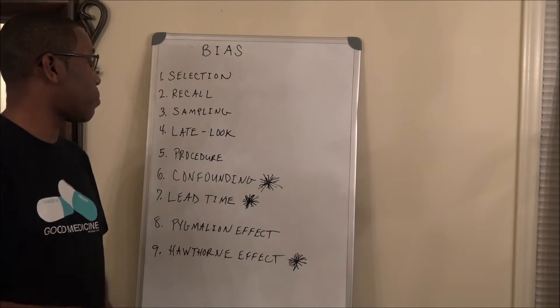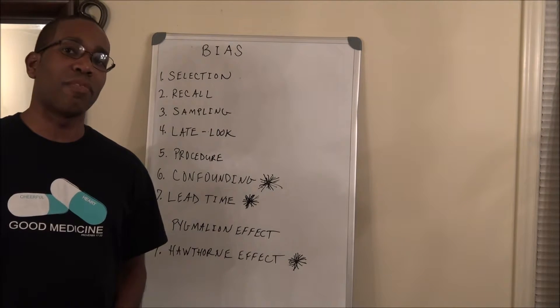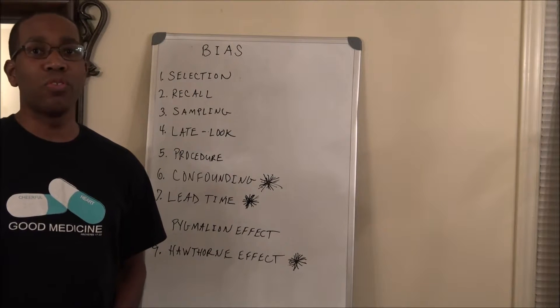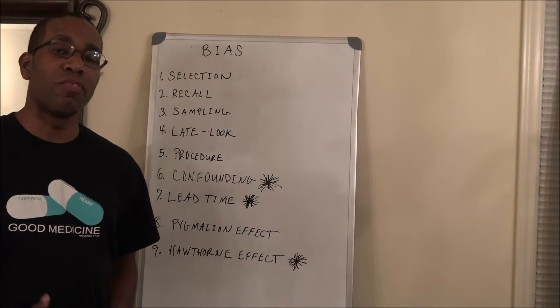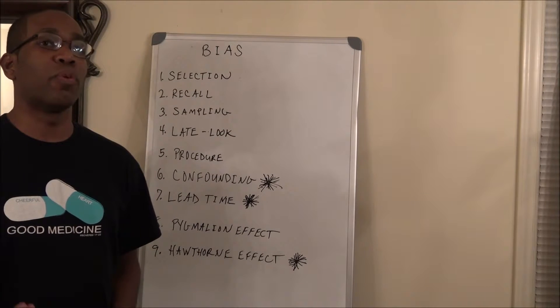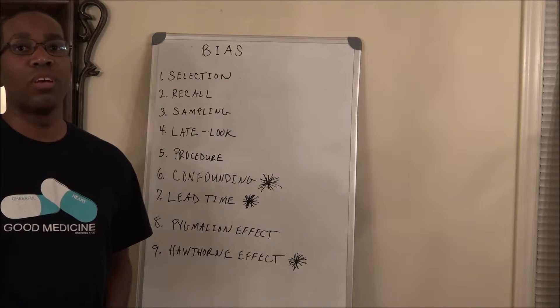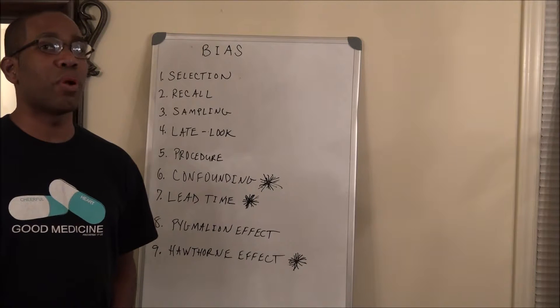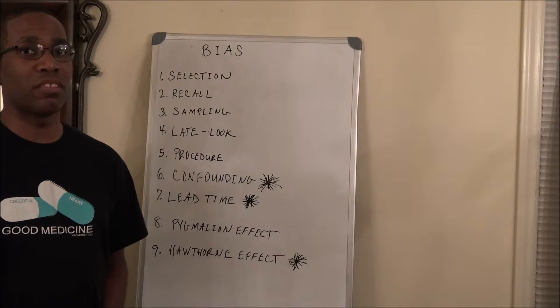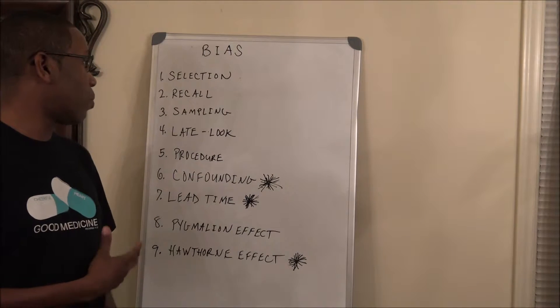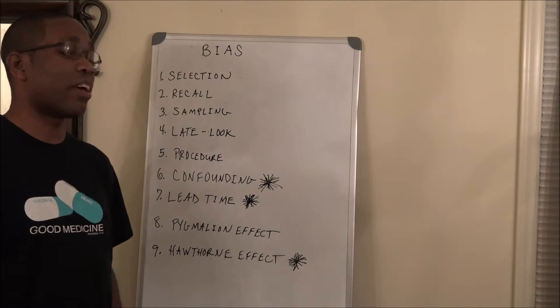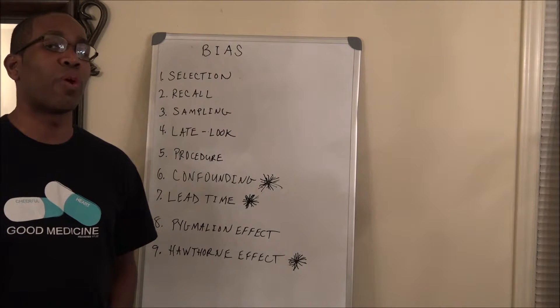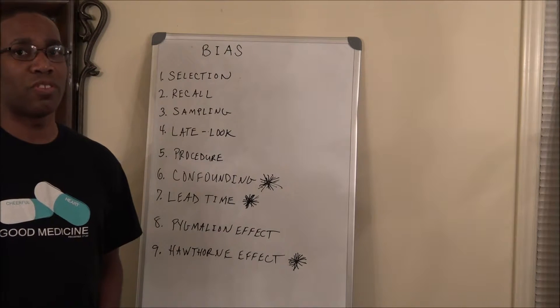Another problem with sampling bias is when you're asking for people who may have been exposed to a particular chemical. You may get individuals who are very sick. Those are the people who may come forward, so those people may not be representative of the general population. One way to combat sampling bias, just like selection bias, is to make sure that you pick a random sample of individuals for your study.